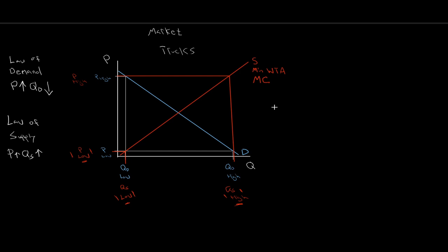The extra cost to produce an extra unit — marginal cost — means that at a high quantity supplied, the corresponding price on the supply curve would be that marginal cost: the extra cost to produce that last truck. So we have three definitions for our supply curve: supply, minimum willingness to accept, and marginal cost.